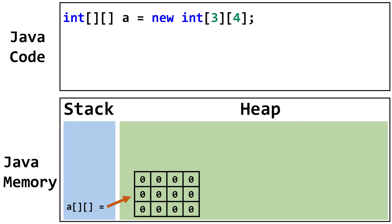Here's the visualization we typically use for tracing. The first number indicates the array will have three rows, while the second number indicates it will have four columns. This visualization is very useful for tracing, but it isn't the most accurate representation of the data structure.